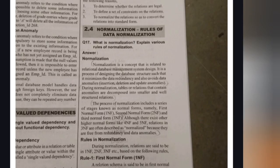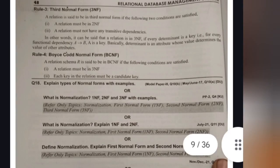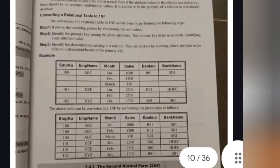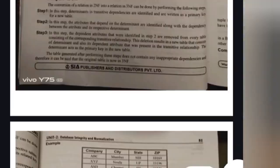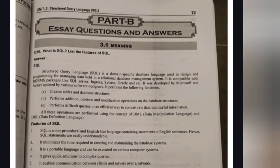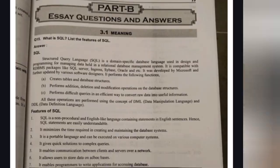Now we will discuss Unit 2 — Normalization. I have already uploaded a video on this in our channel, so try to watch that video. Normalization means storing data using a standardized normal form. There are 1NF, 2NF, 3NF, and BCNF. Watch that video to better understand the concept. This is the first and last question from Unit 2. If you learn from material only, you will not understand it well — watching the video, you can easily get 10 marks.